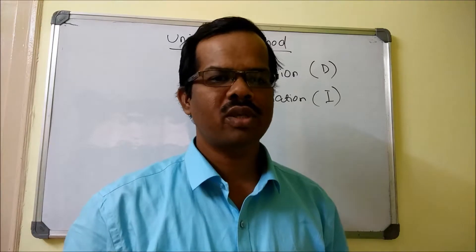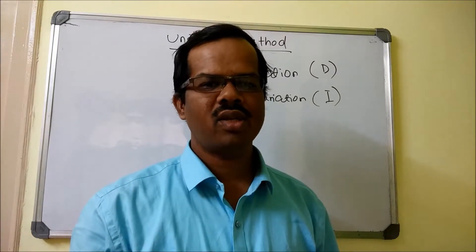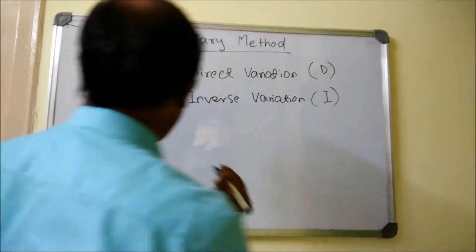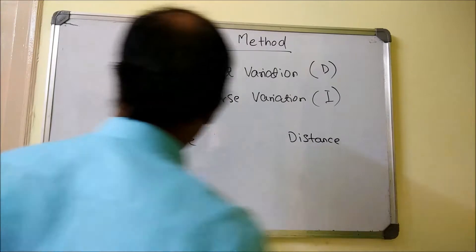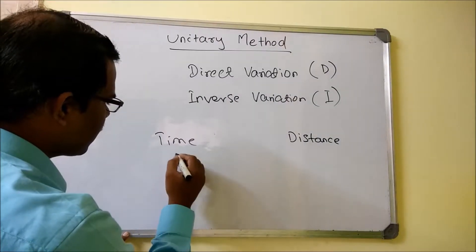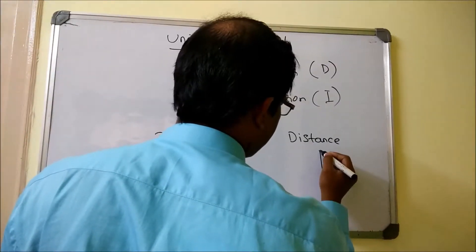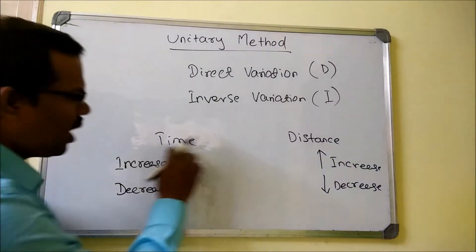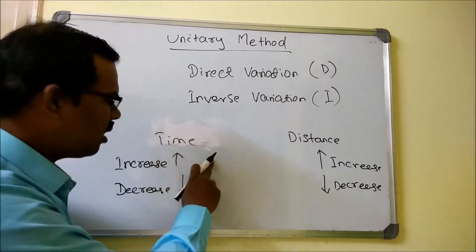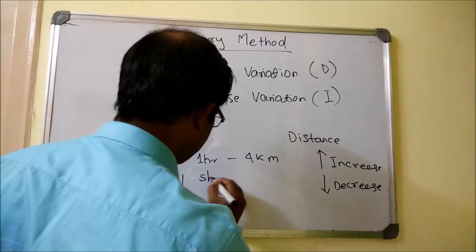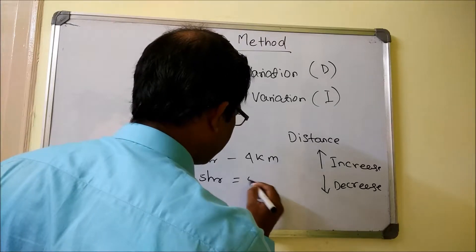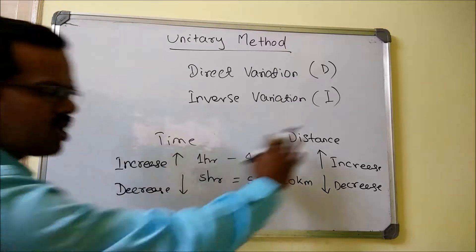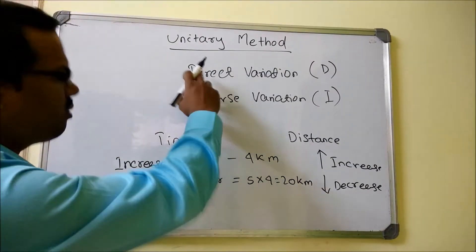We will use the unitary method to solve typical problems. Two important terms to understand before jumping into solutions: one is direct variation, another is inverse variation. What is direct variation? If time increases, the distance traveled increases; if time reduces, distance also reduces. So if I am traveling 4 kilometers in 1 hour, in 5 hours I can easily say 5 × 4 = 20 kilometers. This relationship is called direct variation.